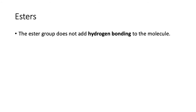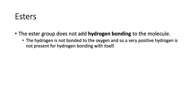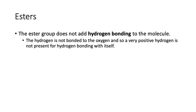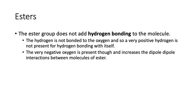The ester group does not add hydrogen bonding to the molecule. The ester group looks like this, where the carbon is double bonded to two oxygens and the oxygen is not bonded to any hydrogens. Since there's no very positive hydrogen, esters by themselves do not have hydrogen bonding. What it does do is increase the dipole-dipole interactions between molecules of esters.